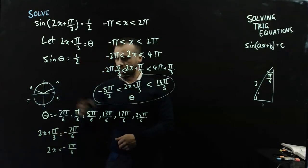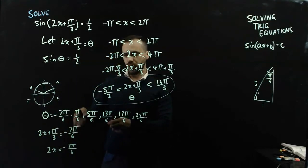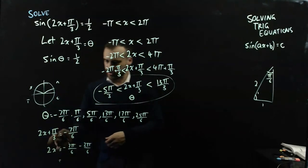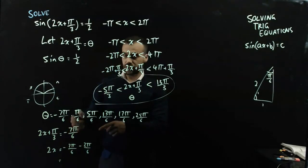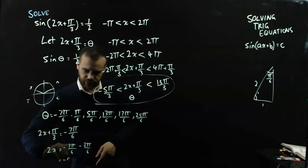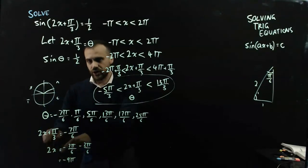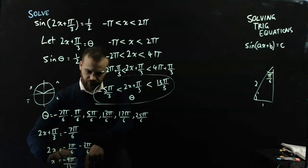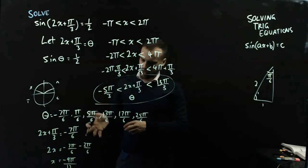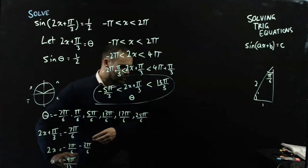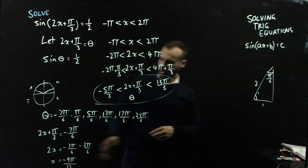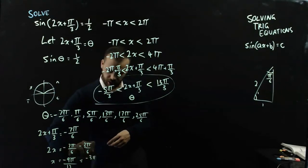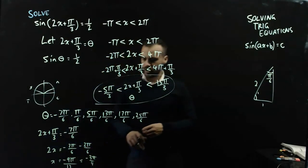2x equals negative 7pi on 6, minus—I'll convert pi on 3 into 2pi on 6—minus 2pi on 6, which means that 2x equals negative 9pi on 6. But if I divide by 2 at the same time, I can get 12, which means that x is equal to negative 9pi on 12, which of course, have I run out of room? I've run out of room, which of course is equal to negative 3pi on 4.